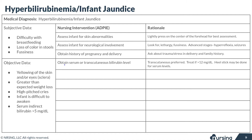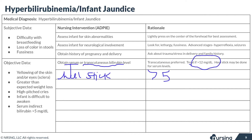Once we've determined that an infant does in fact appear jaundiced, it's super important that we find out their actual bilirubin level by obtaining either a serum or a transcutaneous bilirubin level. The serum blood test is usually done with a heel stick, but the transcutaneous is actually the preferred method. If the level is greater than five, that indicates hyperbilirubinemia, but we don't actually treat until it's greater than 12.